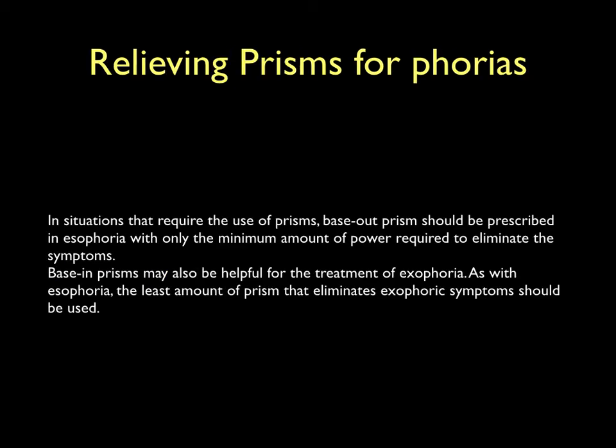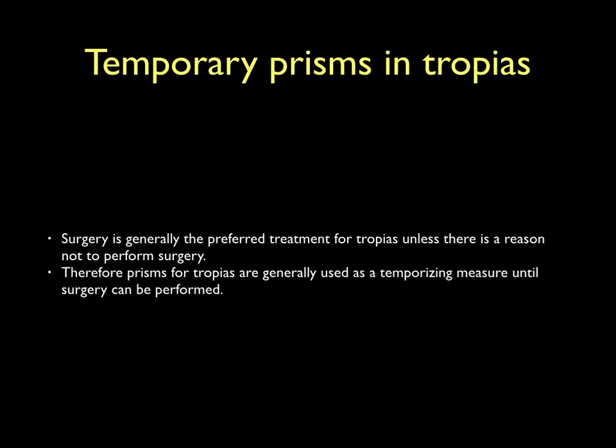Prisms are used in binocular single vision exercises to relieve small-angle phorias and alleviate asthenopic symptoms. A prism adaptation test of 15 to 20 minutes trial can be done to see if the patient's symptoms are relieved by prisms. If the angle of deviation is large, prisms may not be of much help. For correcting tropia, surgery is always the preferred treatment, but if surgery cannot be performed, prisms can be prescribed temporarily.